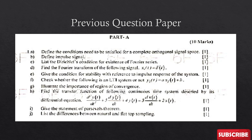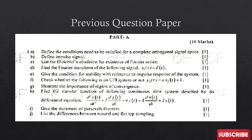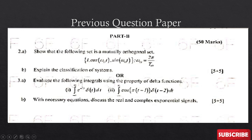Coming to the last segment — the previous question paper. In Part A, questions include: state Parseval's theorem, define impulse signal, find the Fourier transform of a given signal, and give conditions for a function. Basically, questions (a) and (b) are from Unit 1, the next two from Unit 2, the next two from Unit 3, then Unit 4 and Unit 5 — listing differences between natural and flat top sampling.